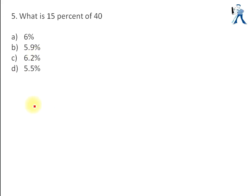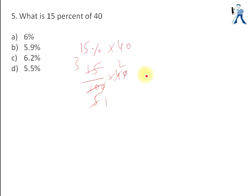Next question: what is 15% of 40? Method one: 15% = 15/100, multiplied by 40. Simplifying — 40 and 100 cancel to give 2/5, and 15 × 2 = 30, divided by 5 gives 6. The answer is 6. However, for bigger questions you cannot always rely on this direct method.